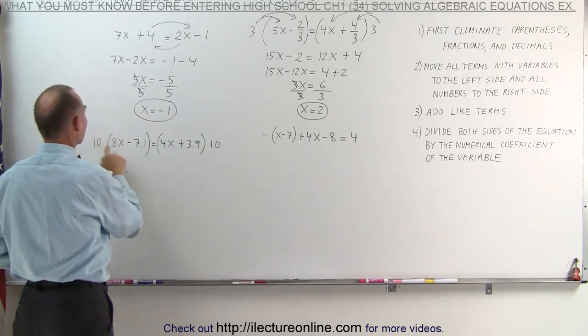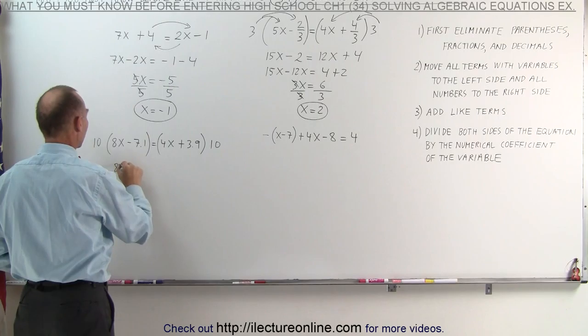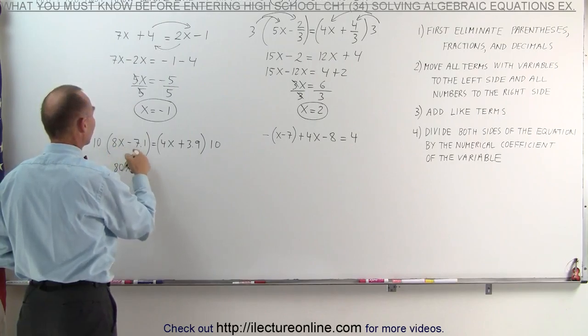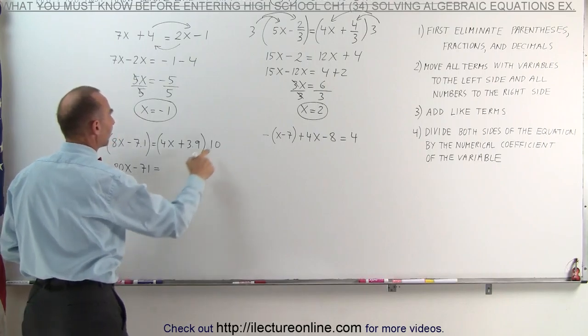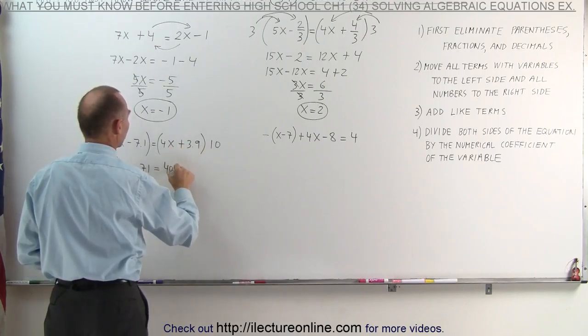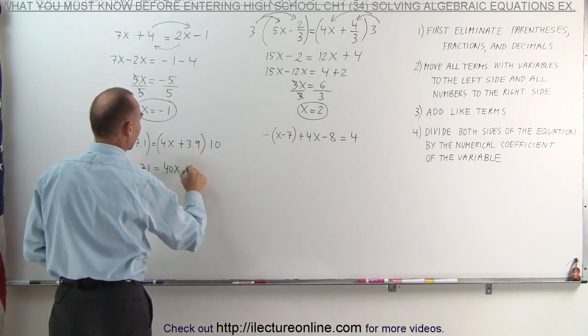The left side becomes 10 times 8x, which is 80x. And 10 times minus 7.1 is minus 71. Equals on the right side, 10 times 4x is 40x, and 10 times 3.9 is 39.